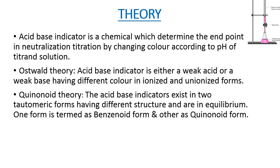Coming to the quinoid theory, according to this theory, the acid-base indicators exist in two tautomeric forms having different structure and are in equilibrium. One form is termed as benzenoid form and the other form is known as quinoid form and the two forms have different colors.